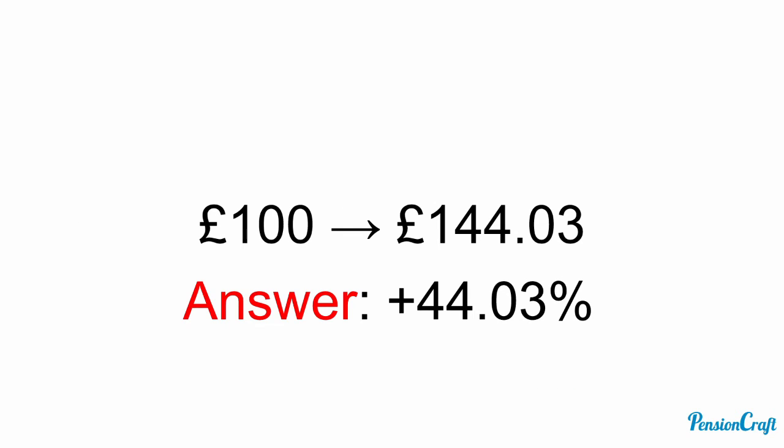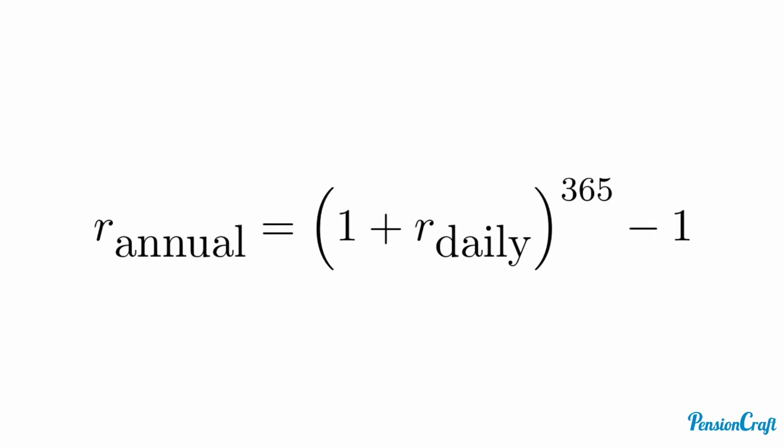The interest we've received as a percentage is 44.03%. So here it is as an equation. We add one to the daily rate and raise it to the power of 365, and that's because there are 365 days in a year.